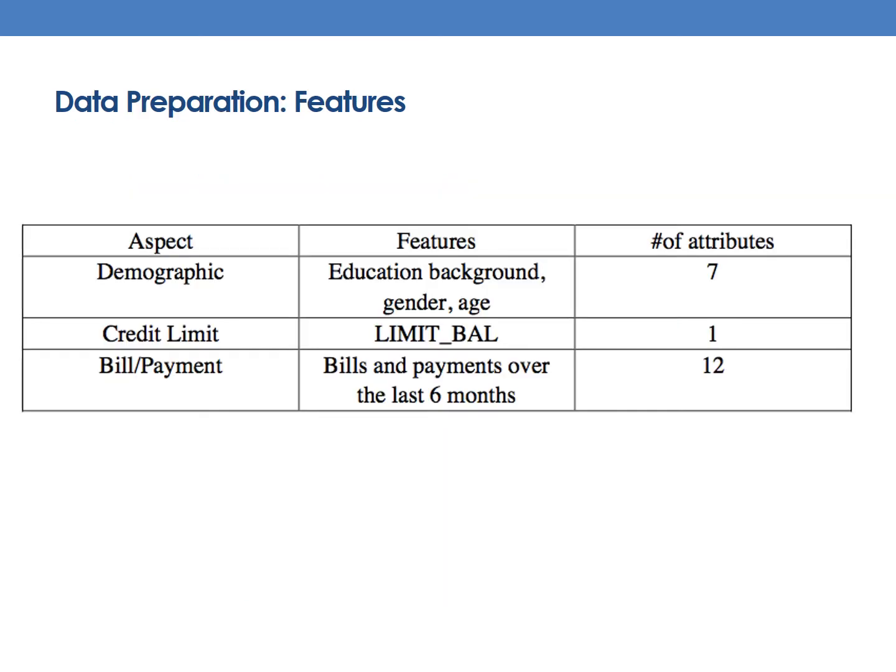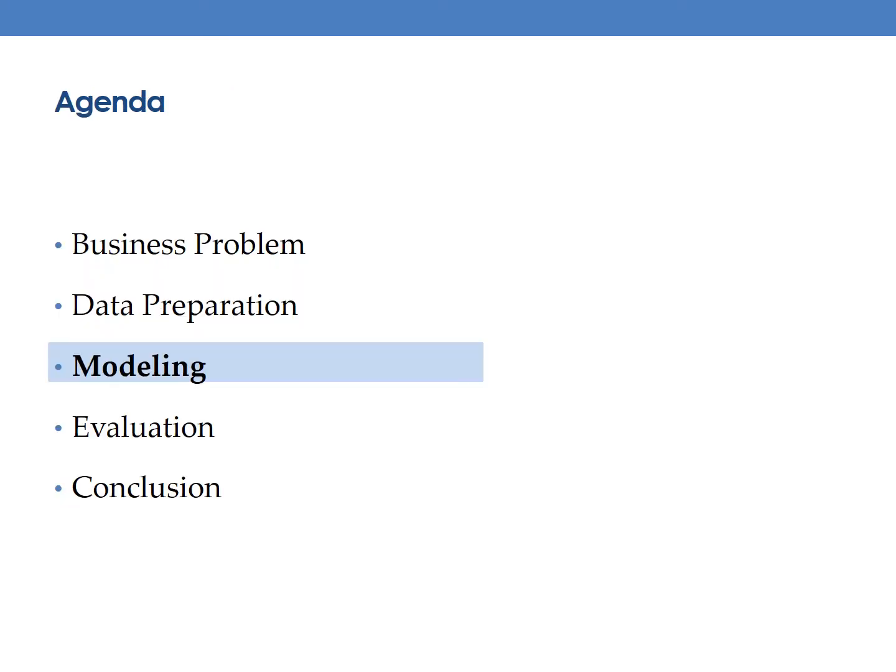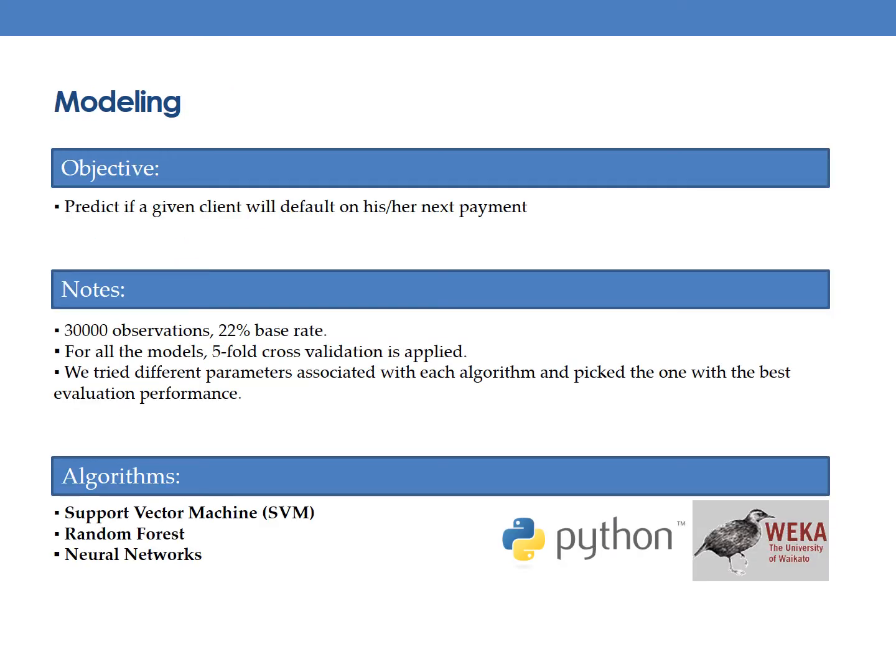We have seven demographic attributes, one attribute for credit limit, and 12 attributes regarding the bill and payment information of the client over the past six months. Our objective is to predict if a given client will default on his or her next payment. Our dataset has a base rate of 22%, meaning that 22% of our clients in the dataset defaulted on the payment.